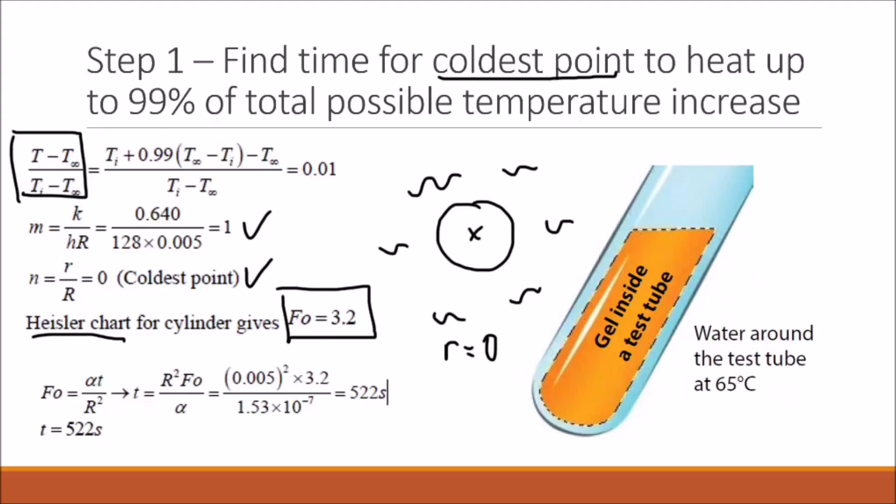Using this value of 3.2, we can solve for the time to find that our time for the coldest point to heat up to 99% is 522 seconds.